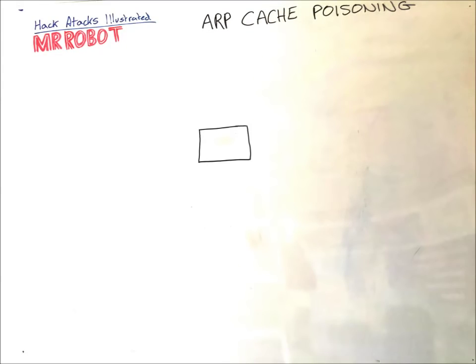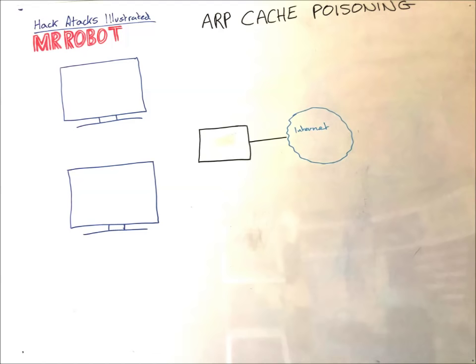But what if you're not using Wi-Fi? Or have something like a switch that stops the packets going everywhere? That's where ARP cache poisoning comes in. So in this scenario, we have the switch and all the other equipment on the network, the internet, two nice computers, and a not so nice computer.